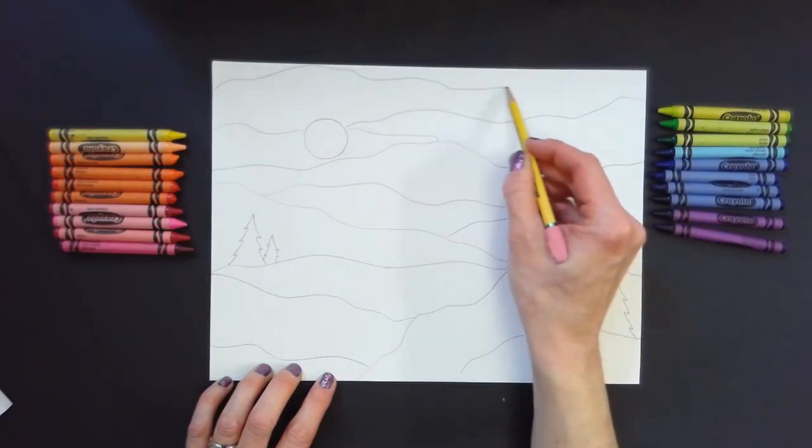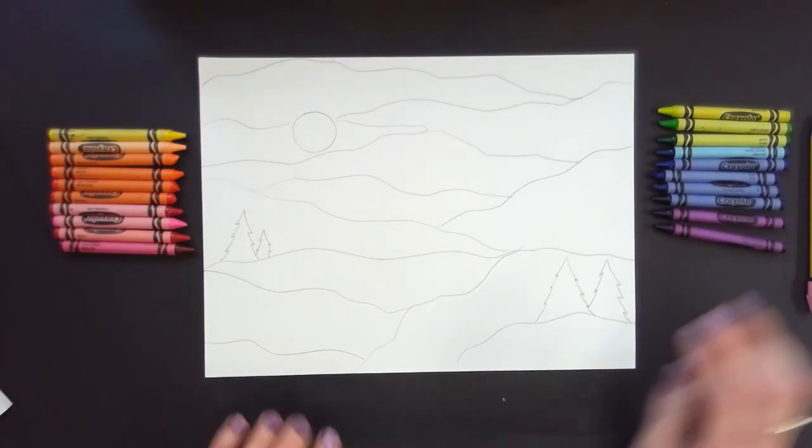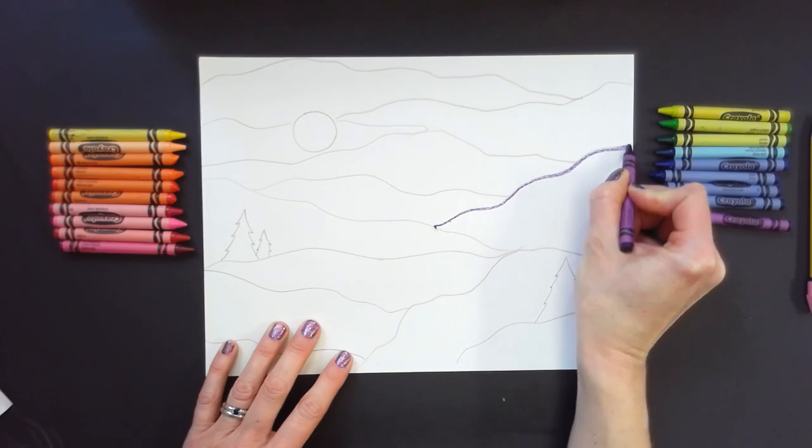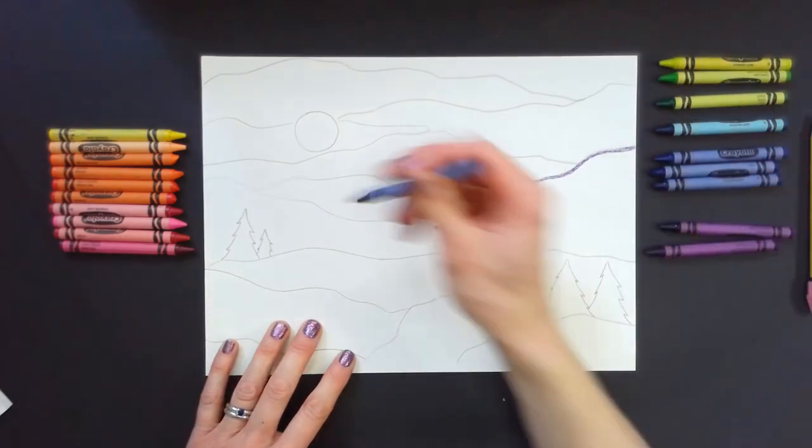When drawing the sky, remember to include a sun or a moon and add lines to show movement in the sky similar to the layers of lines you used in the ground.